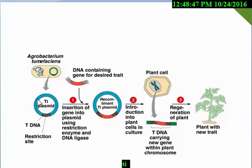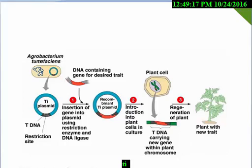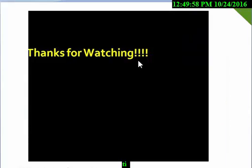That is the whole process of agrobacterium mediated gene transfer. By using Agrobacterium, we use the T-DNA region to attach our gene of interest, creating a recombinant Ti plasmid. That recombinant Ti plasmid attaches to our plant, and then the plant is produced with a new trait. I hope everyone can now easily understand what is agrobacterium mediated gene transfer. Thanks for watching. If you like this video, subscribe, like, and comment what you want to know.